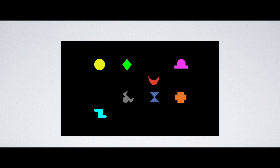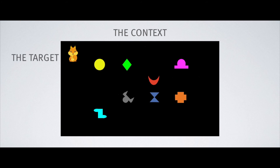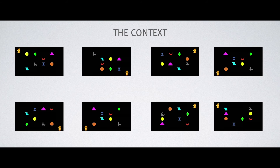Here is an example of the stimuli we used to study this ability in infants. In each scene, a series of geometrical shapes was presented at various locations on the screen — that's what we called the context. Right after, an interesting blinking object, the target, appeared in one of the corners of the screen. Infants were habituated to eight of those scenes. For each context, the target appeared always at the same location, so that each context exactly predicted the location in which the target would appear on the screen.